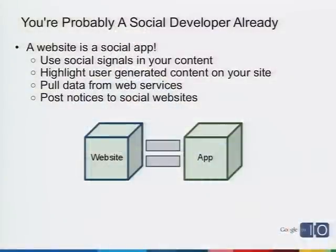Before we get to that, let's talk about why you'd want to use Friend Connect as opposed to any other system. If you're a website owner, you're probably a social developer anyway. Websites are social apps because people come to them, they interact, things they do on the site are surfaced in the UI, and people see what other users have done. You can pull data from web services, mash things up — it's very much like a social application on Facebook or an open social container.